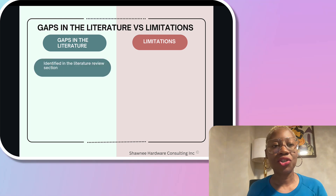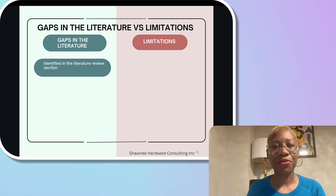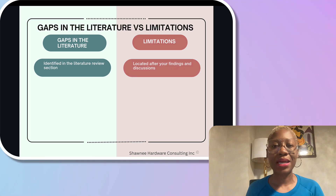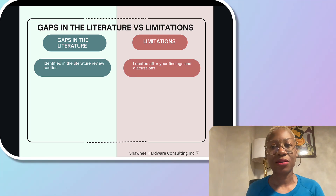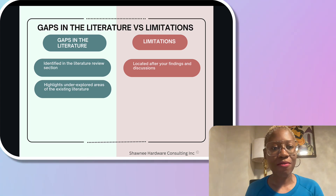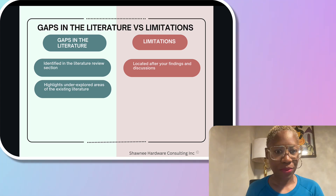The gaps in the literature is identified in the literature review section of your paper, whereas the limitation is located in your findings and discussion chapters. Gaps in the literature highlights underexplored areas of the existing literature.